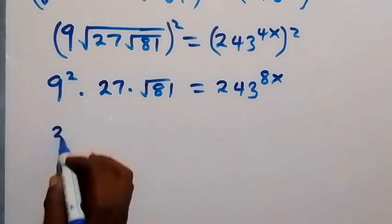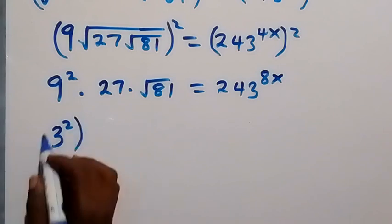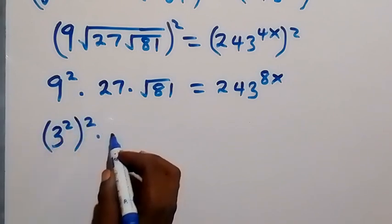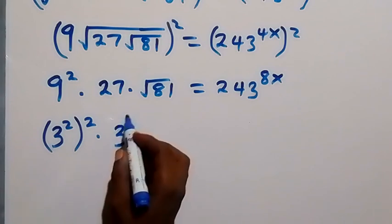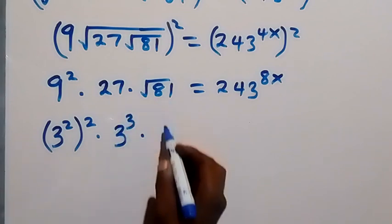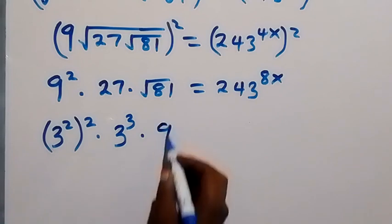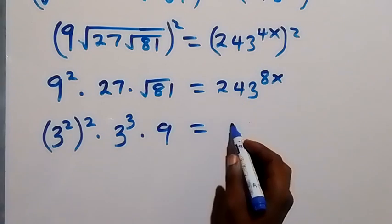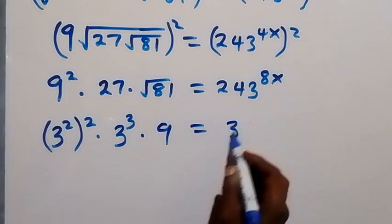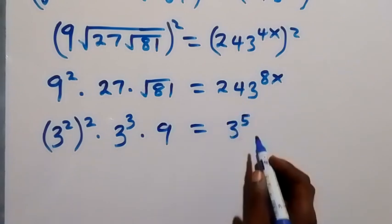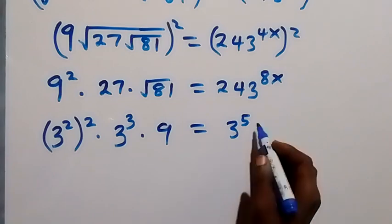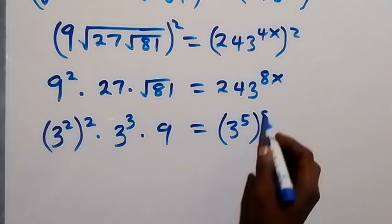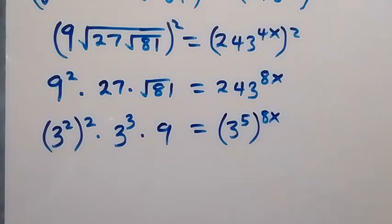In the next step, 9 squared can be written as 3 squared, then squared. We write 27 as 3 raised to power 3, then times root 81, which is the same as 9. On the right side we can change 243 to 3 raised to power 5 — since 3 multiplied five times gives us 243 — raised to power 8x.